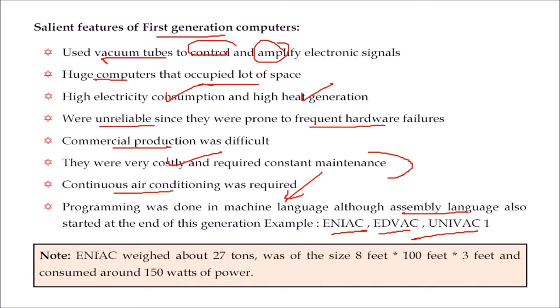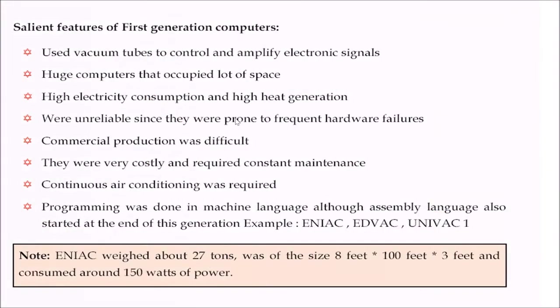In fact, ENIAC weighed 27 tons, its size was 8 by 100 by 3 feet, and it consumed around 150 kilowatts of power.